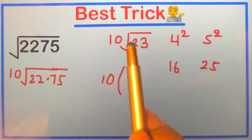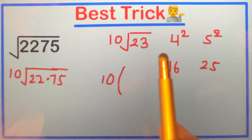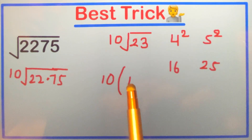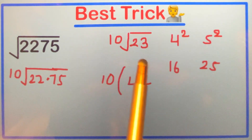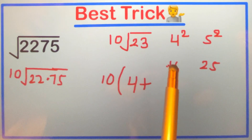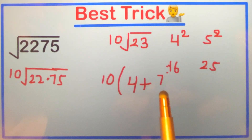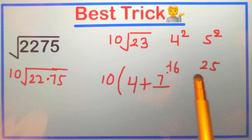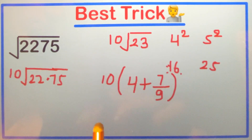To write √23, we first write 10, and then apply the formula. Write down the smaller number, which is 4, then plus the difference between our number and the lower perfect square — that is 23 minus 16 equals 7 — divided by the difference between the two perfect squares, which is 25 minus 16 equals 9.